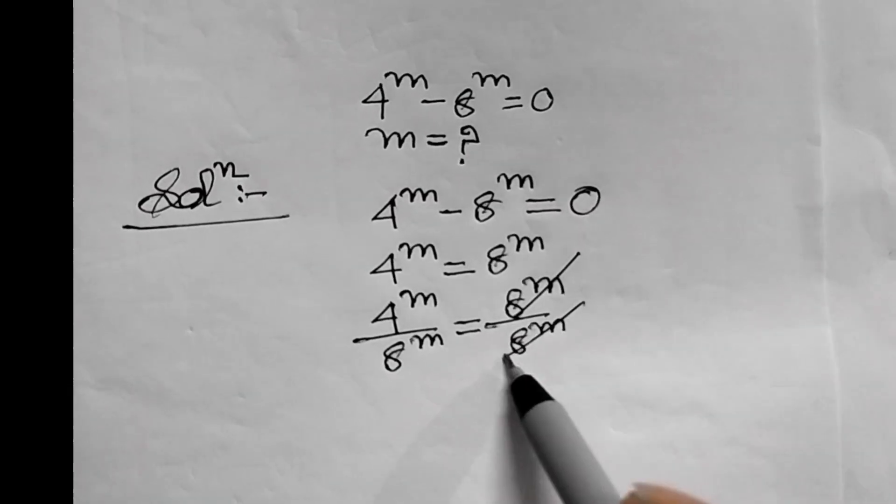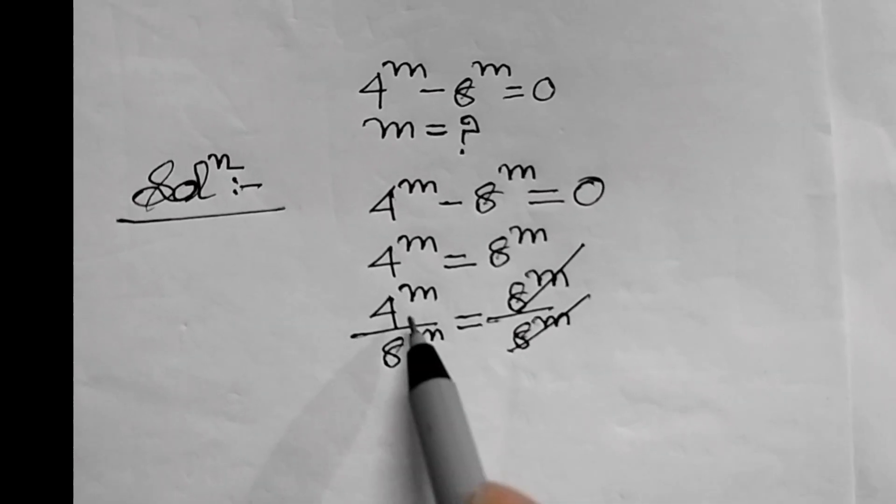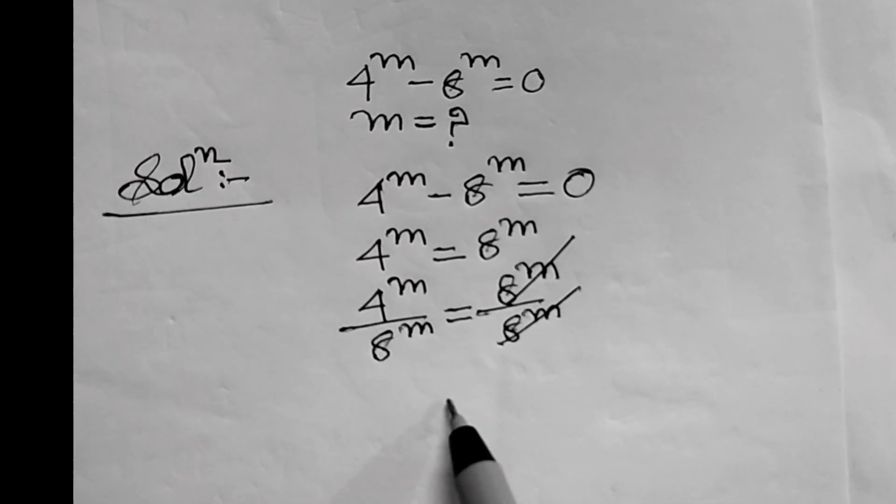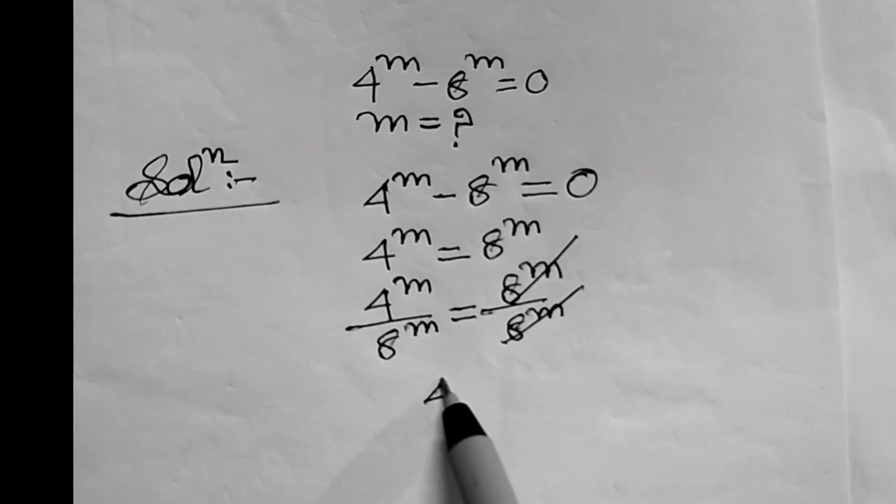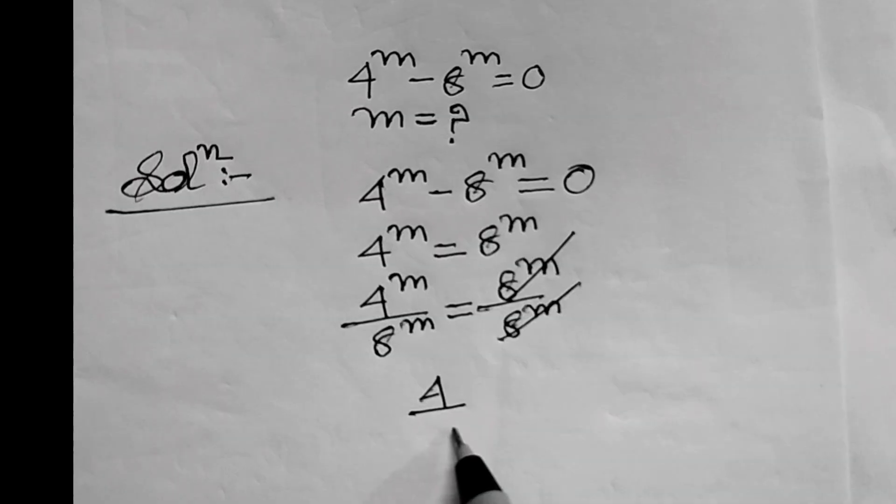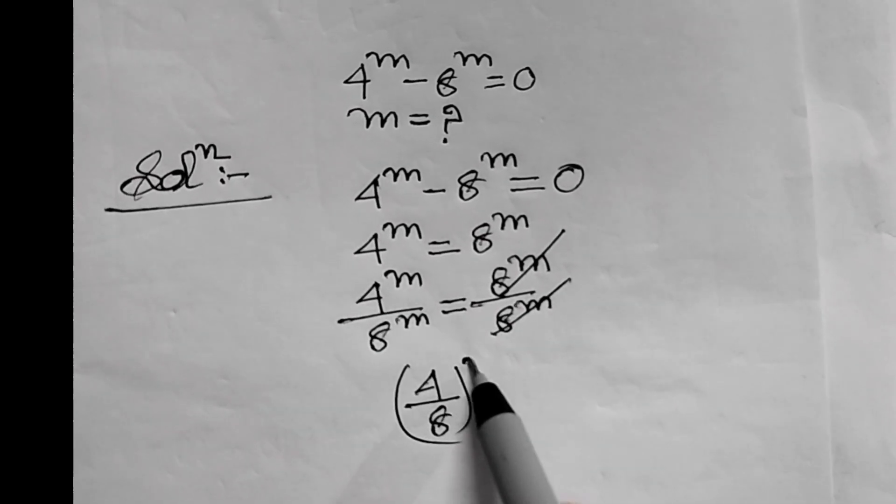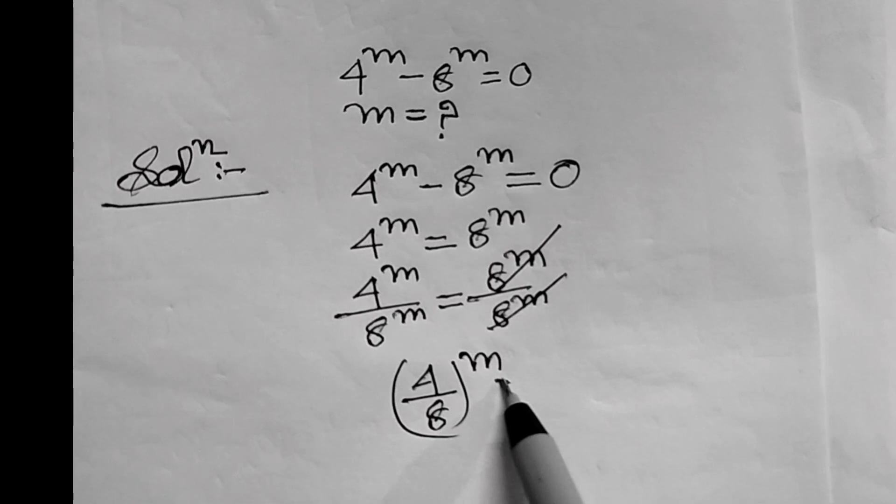Here, 8 power m upon 8 power m will be cancelled. For the result, 4 power m upon 8 power m can be written as 4 upon 8 whole power m equals 1.